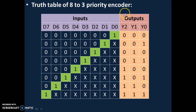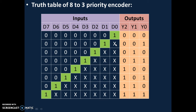Now let's see the truth table. A truth table is a table of inputs and outputs of the circuit. We have 8 inputs D0 to D7 and 3 outputs Y0 to Y2. When input D0 is 1, the code for 0 — which is 000 — is generated at the output. When D1 is made high, D0 becomes a don't care condition, marked as X. We don't care the value of D0 because it doesn't matter whether D0 is 1 or 0 — D1 has higher priority, so code of D1 is generated.